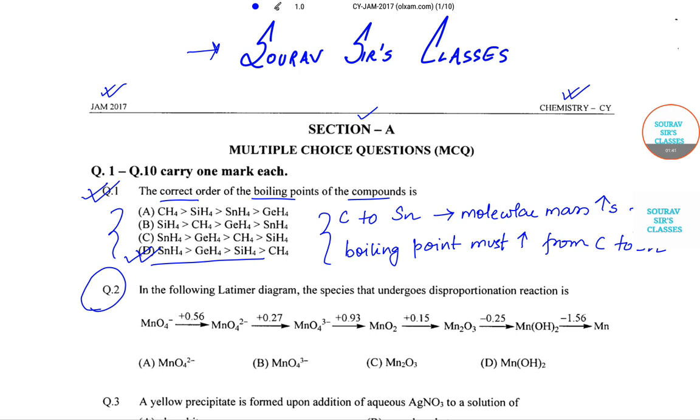The next question says in the following Latimer diagram, the species that undergoes disproportionation reaction is. So we need to comment on the species that will undergo disproportionation reaction, and from the diagram it is very much clear that MnO4^2- will, that means option number B will actually go under disproportionation reaction.